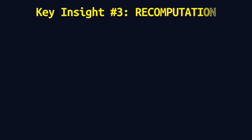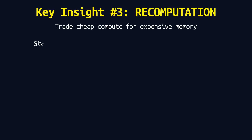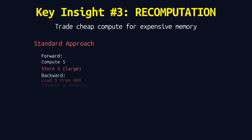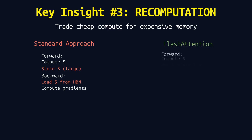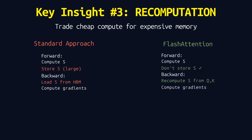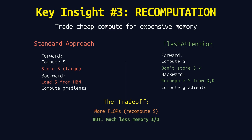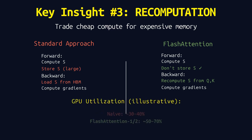Key insight number 3: Recomputation. Standard attention stores the attention matrix S during the forward pass so it can use it in the backward pass for gradients. Flash Attention doesn't store it. In the backward pass, we just recompute the attention scores from Q and K. Yes, that's more floating-point operations, but modern GPUs have compute to spare — what they don't have is memory bandwidth. We trade cheap compute for expensive memory. The result: GPU utilization goes from 30–40% with standard attention to 75% or higher with Flash Attention.